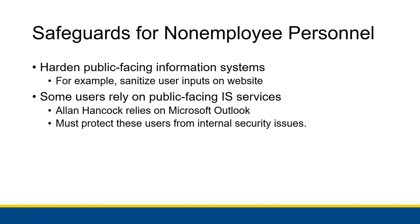Some users rely on public-facing information system services — for example, we rely on Microsoft Outlook for email communication, so Microsoft has to protect all of us from internal security issues. If something bad happens at Microsoft, they need to make sure we can still use Outlook without compromise, whether that's the actual service itself or the data being sent through OneDrive or email attachments. Those safeguards need to be in place to protect both the inside from the outside and the outside from the inside.